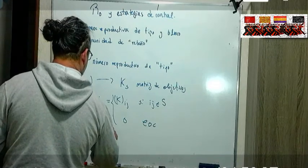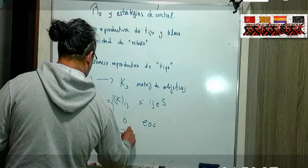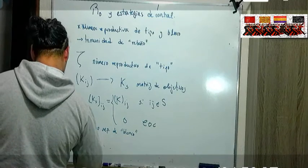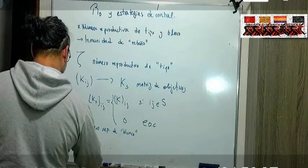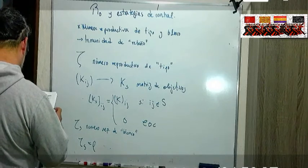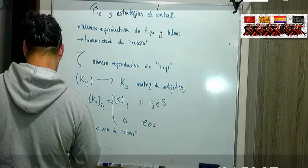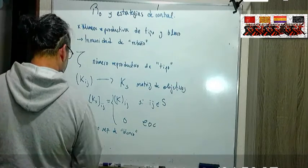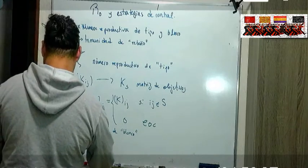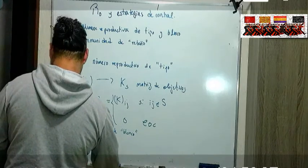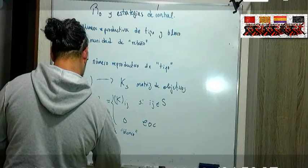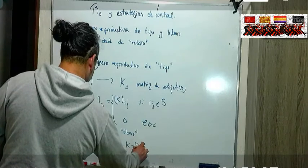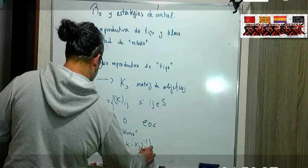Si IJ son parte del objetivo y si no son parte de la población objetivo entonces se le asigna el cero. Entonces es una matriz rala que se corresponde con la matriz de siguiente generación de esa forma, nada más en las partes que son blanco.